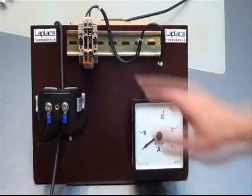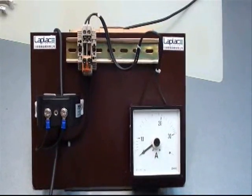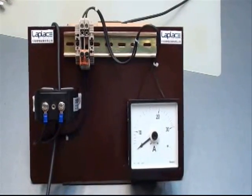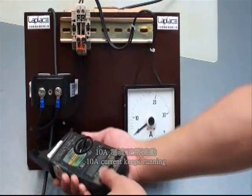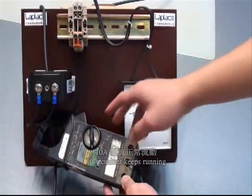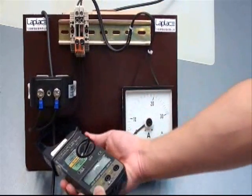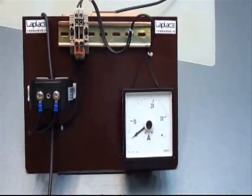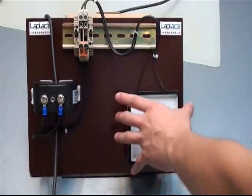And then the current is shorted. And then we can detect that there is current that keeps running, and then we can take away the meter.